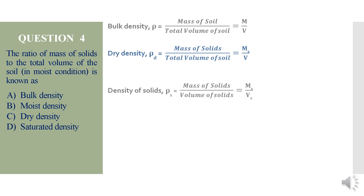Density of solids (ρs) refers to a particular solid particle — it is the mass of solids divided by volume of solids. This is different from dry density and bulk density. In dry density, we consider the mass of solids out of the total volume of soil. In bulk density, we consider the total mass of soil out of the total volume of soil.